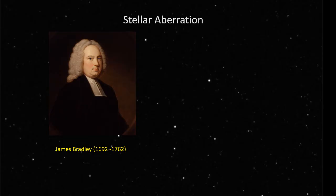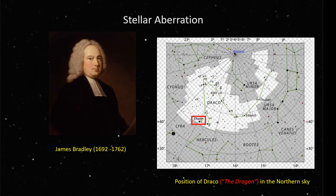The story started back in 1727, when the English astronomer James Bradley had been taking measurements of the position of Eltanin, the brightest star in the constellation of Draco, the Dragon.